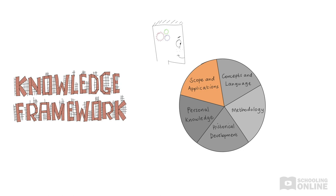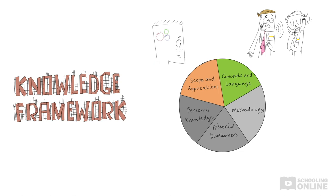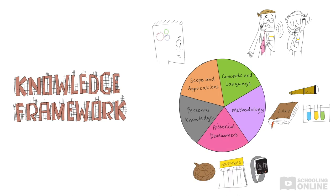First, we can look at scope and applications. This aspect covers the range of knowledge in the area and how that knowledge is used. Next, we can unpack relevant concepts and language. This element explores the key ideas in each area and how we produce and describe knowledge using technical, area-specific language. Then, we have methodology, which refers to the distinct methods that each area uses to produce knowledge.